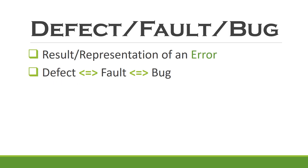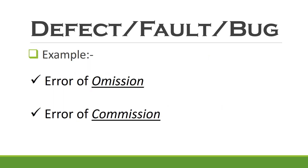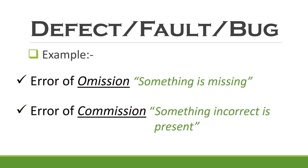On the other hand, defect, fault, or bug is a result or representation of an error or mistake. The formal technical term for fault or defect is bug, and the process of finding and correcting the bugs is called debugging. Similar to an error, a defect can arise at any stage of the software development life cycle. To get a better understanding between error and defect, we can have examples of error of omission — where something desirable has been missed out from the system — and error of commission, where something incorrect has been implemented.